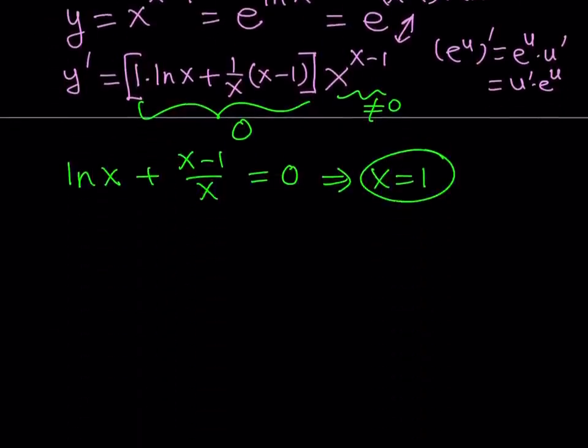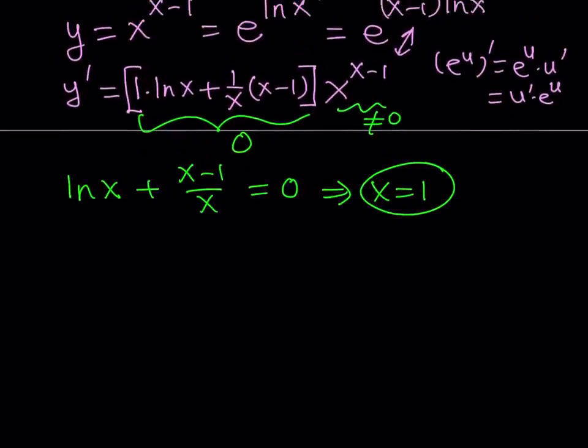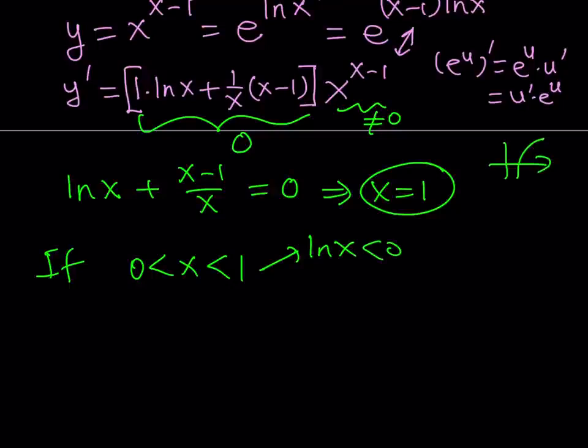So x must be positive. And if x is positive, I can break it down into two intervals. So I can say that if x is between 0 and 1, then if x is less than 1 and greater than 0, lnx is going to be negative. If you consider the graph of lnx, you'll see what I'm talking about. And what about the other piece? If x is between 0 and 1, x minus 1 over x is also going to be negative. Therefore, their sum is also going to be negative, which means that y prime is going to be less than 0.